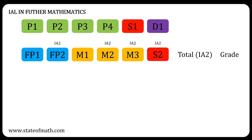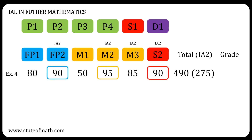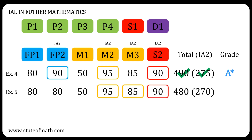Here we have swapped the S2 and D1 units, so now in the IAL in further mathematics we have four IA2 units. In example four, the total UMS is 490 and the total of the best three IA2 units is 275, so both conditions are satisfied and an A-star is awarded. In example five, FP2 is decreased by 10 marks, the total UMS drops to 480, but the total of the best three IA2 units only drops by 5 marks to 270, since we will be counting M3 instead of FP2. Both conditions are still satisfied, so an A-star is awarded again.